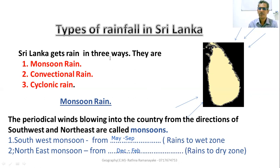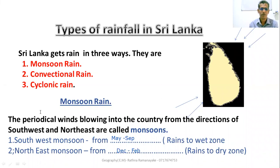Name the three ways that Sri Lanka gets rain: monsoon rain, convectional rain, and cyclonic rain. What is meant by monsoon? The periodical winds blowing into the country from the direction of south-west and north-east are called monsoons.